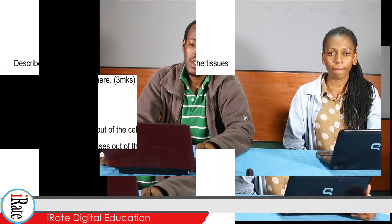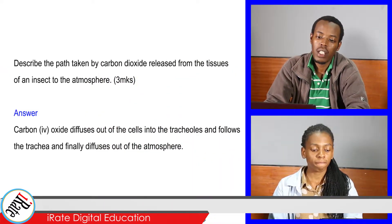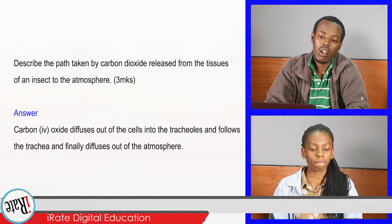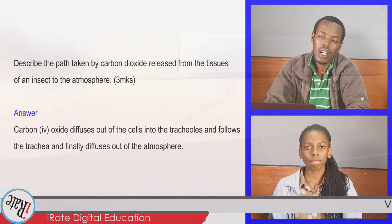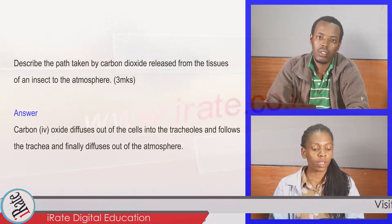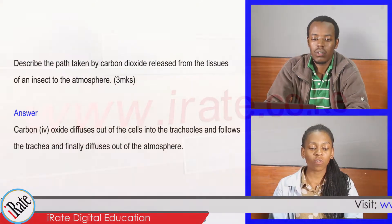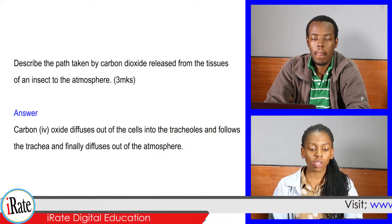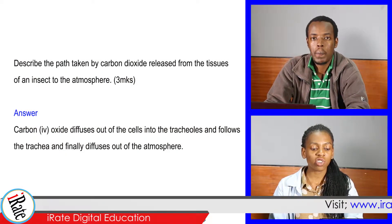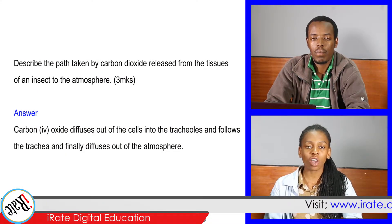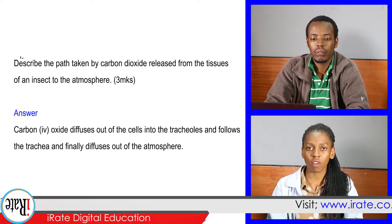Describe the path taken by carbon dioxide released from the tissues of an insect to the atmosphere. Carbon dioxide diffuses out of the cells into the tracheal system and finally diffuses out of the atmosphere.